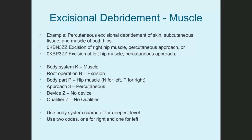Here's an example: percutaneous excisional debridement of skin, subcutaneous tissue, and muscle of both hips. We use a code for muscle because that's the deepest tissue. The codes are 0KB3ZZ for the right and 0KP3ZZ for the left hip — body system K for muscle, excision, hip, percutaneous approach, no device, no qualifier. Two codes are needed because there's no bilateral value.